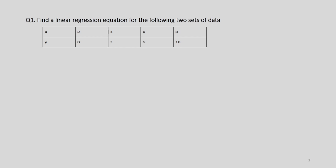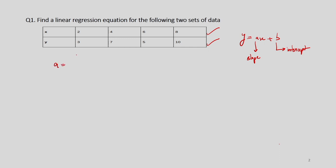The first question we have is to find the linear regression equation for the following sets of data. We are given a dependent variable and an independent variable. X is our independent variable and Y is the dependent variable. We can represent the equation of the dependent variable where A represents the slope of the line and B represents the intercept of the line. There are formulas through which we can find A and B.